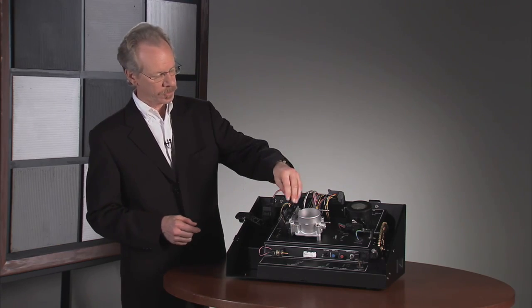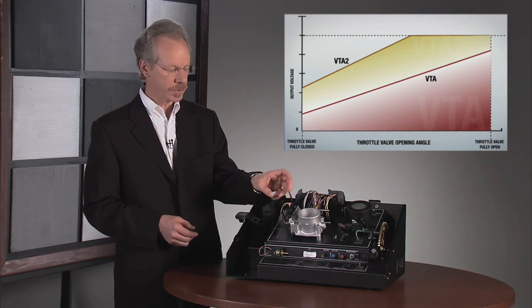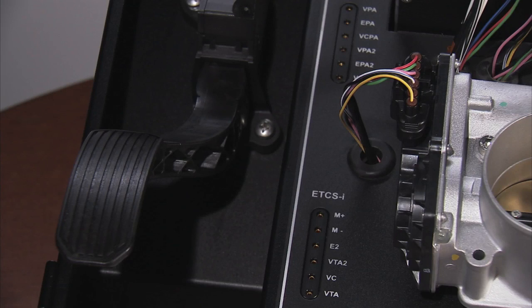Similarly, there are two position sensors on the electric throttle assembly. When the motor drives the throttle open, both sensors have to confirm it's moved to the correct position or it'll be shut off.